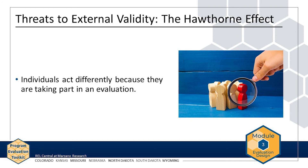Ultimately, the high-profile nature of the program could cause it to appear more effective than it would be without the visible funders and media coverage. In other words, some of the observed effects would be due to factors other than the evaluation of the actual program. If AMP were implemented later with less fanfare, it might lead to less positive outcomes. This is an example of the Hawthorne effect.